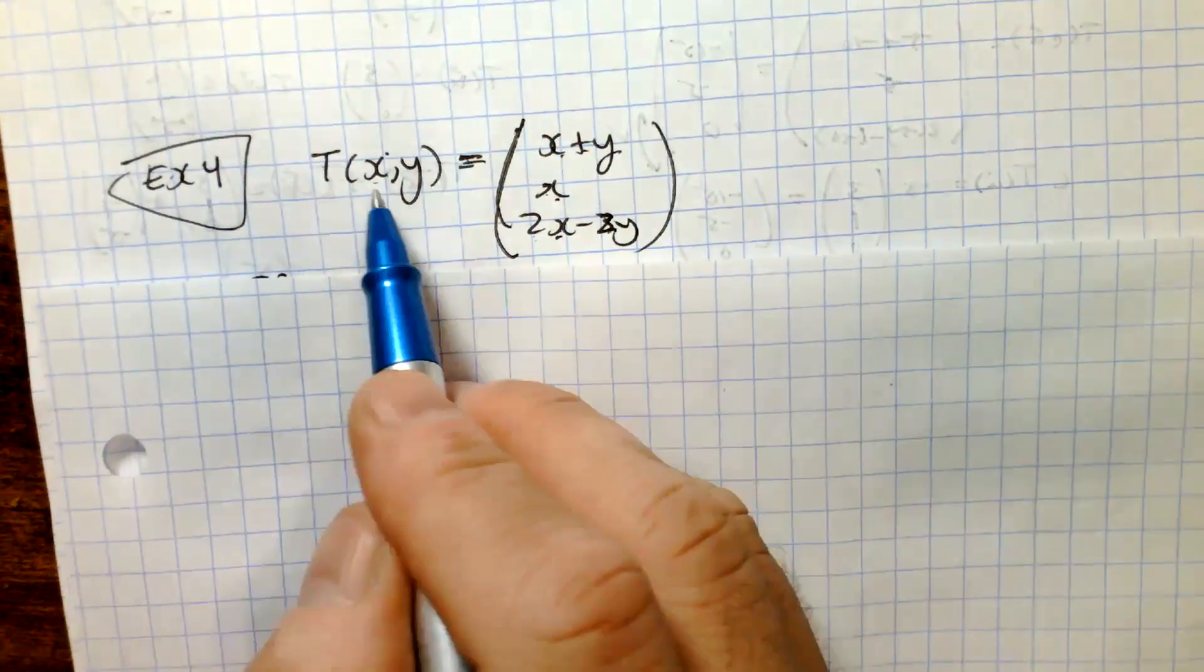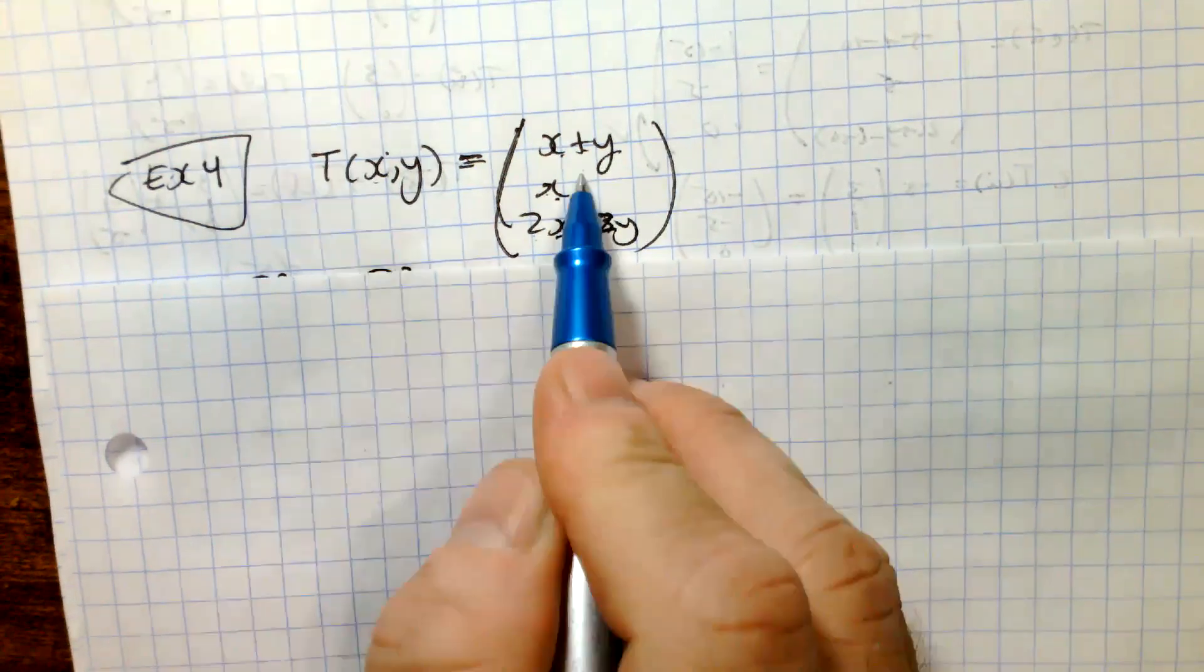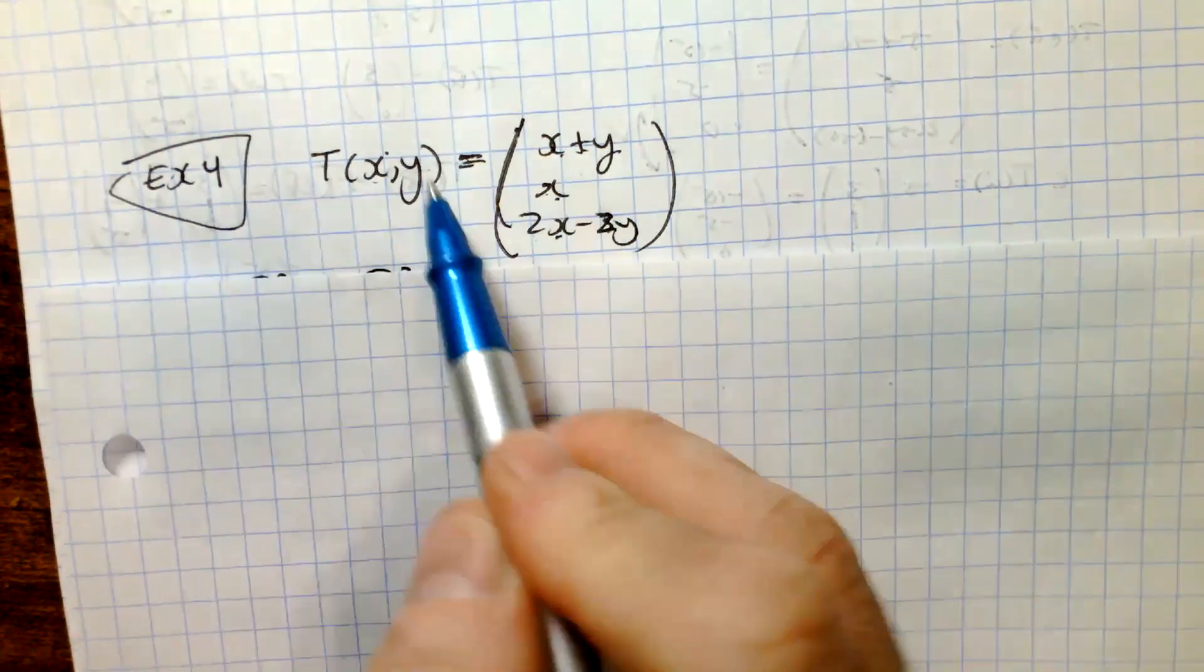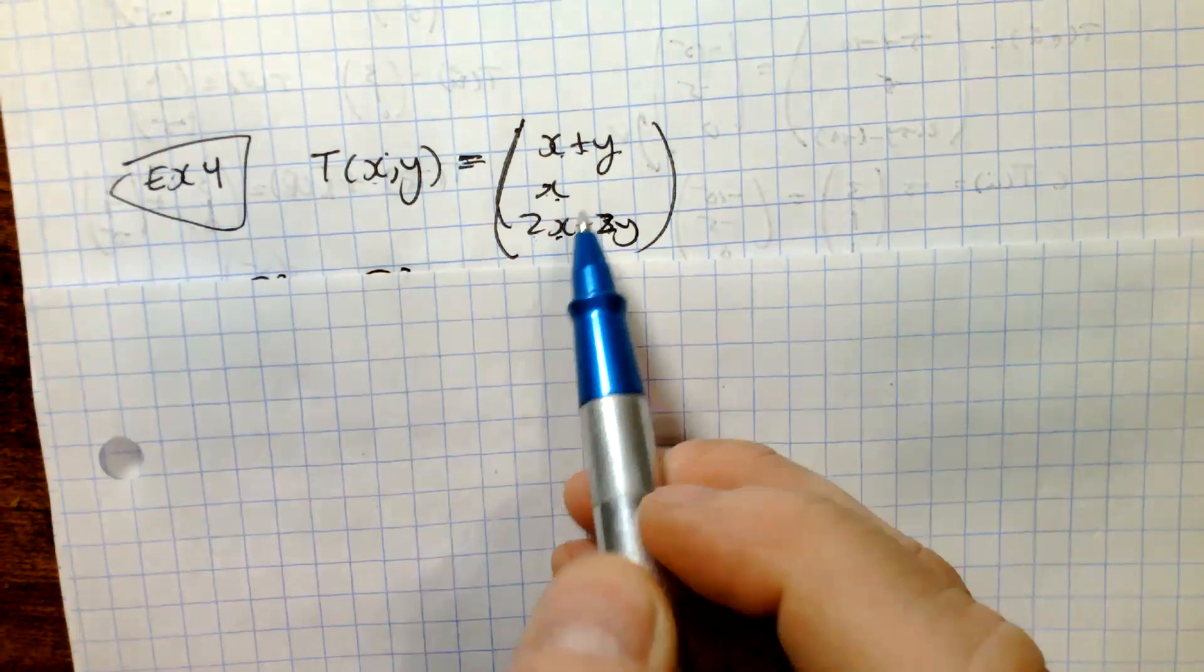In the fourth example, we're going to see if this map from R2 to R3 is, we're going to figure out what this map is like in terms of the matrix. And so this is a transformation.